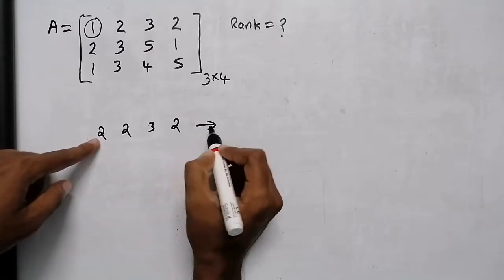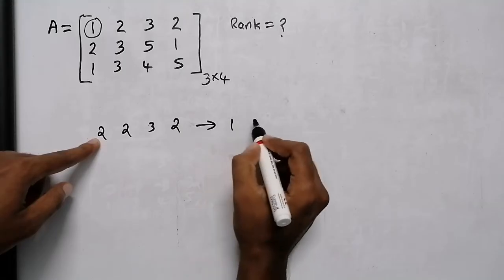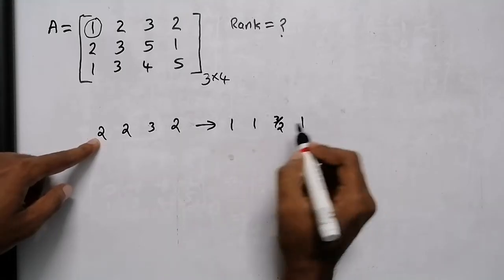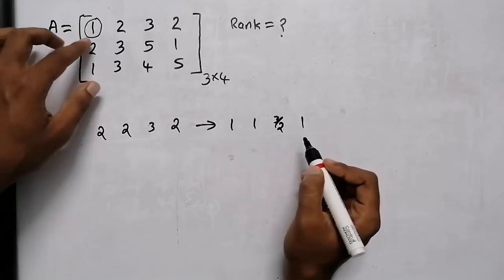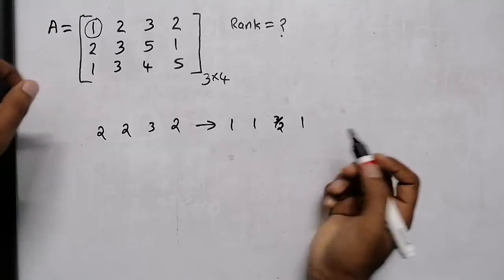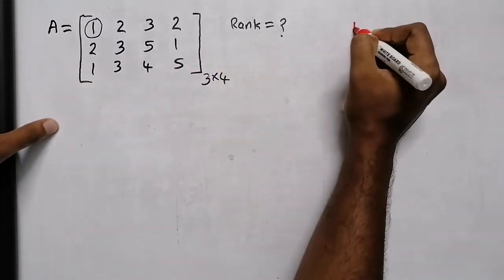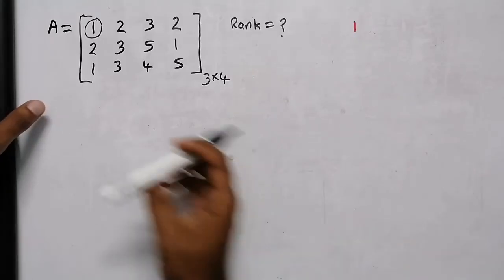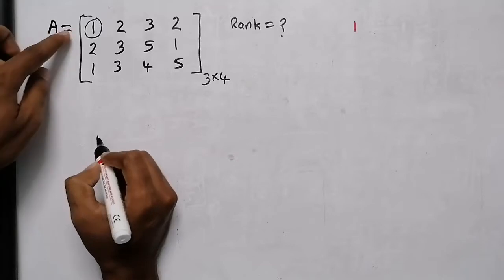This row is full. By 2, 1, 3 by 2, 1. This row is full. In this case, this row is already 1. The first operation is 1.